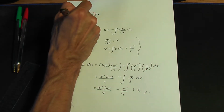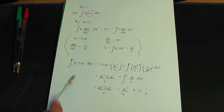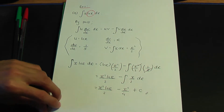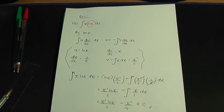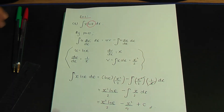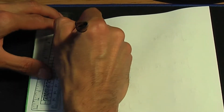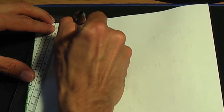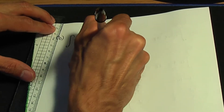Remember: if your integral contains ln or an inverse trigonometric function, it's by parts, and it's a special case — take u to be the ln or the inverse trigonometric term, and dv/dx will be the remaining term. Let's take another example, part b: integrate tan inverse x with respect to x.